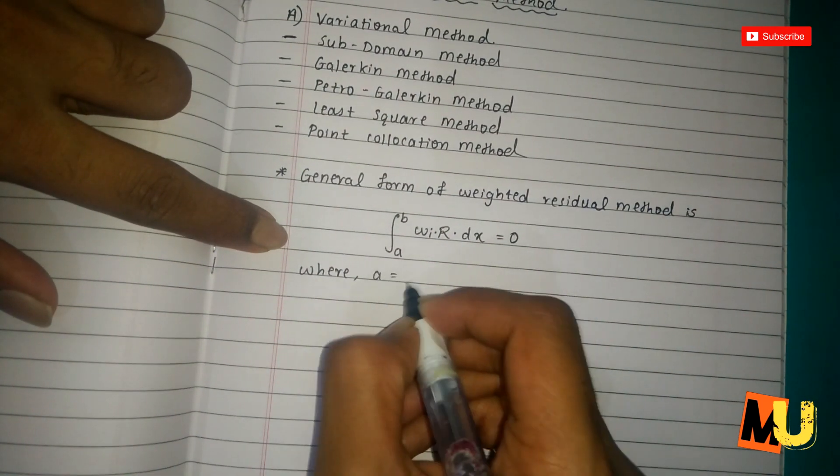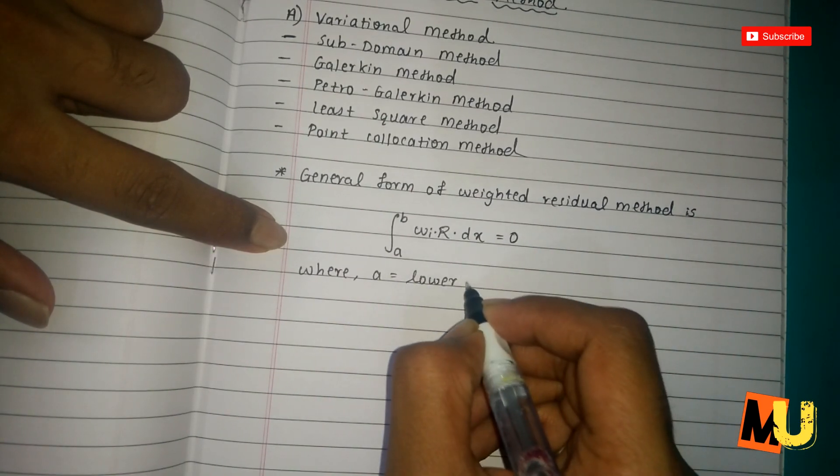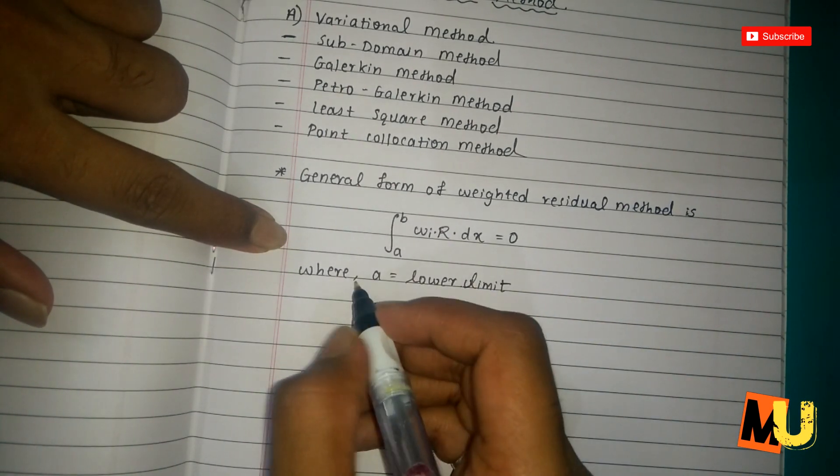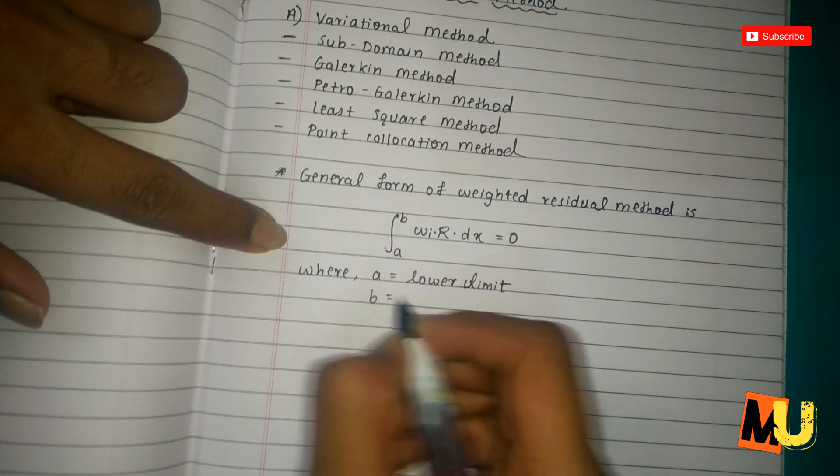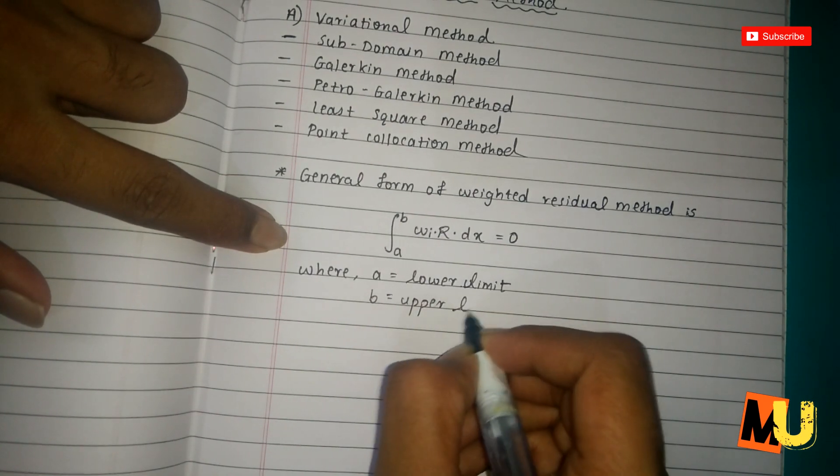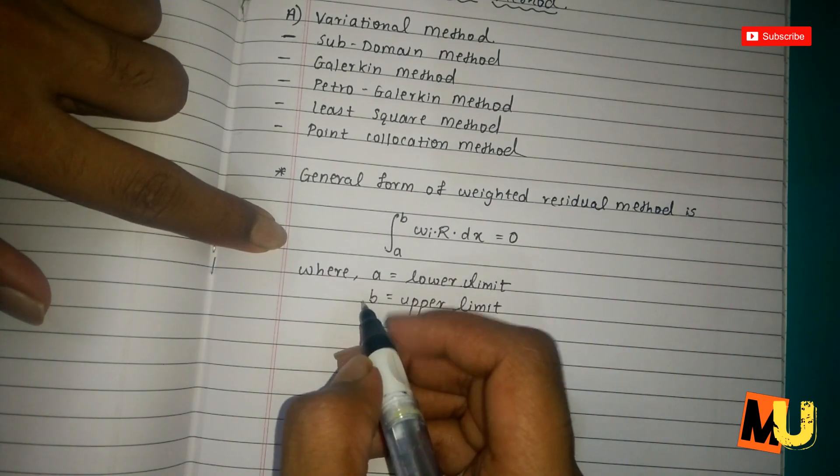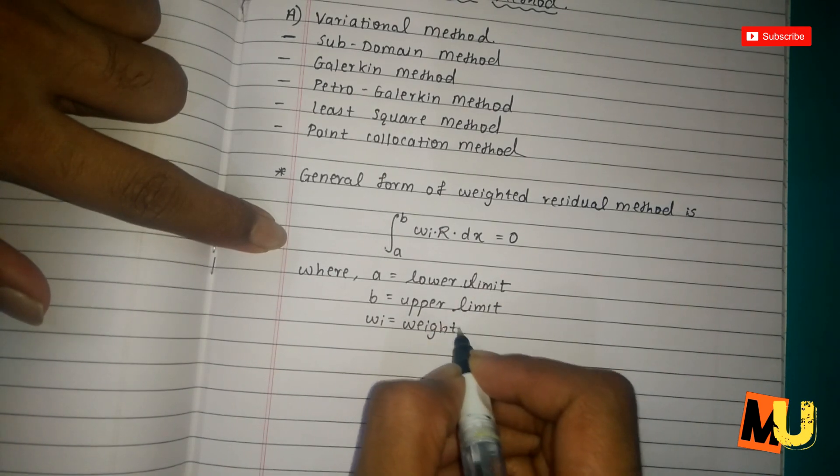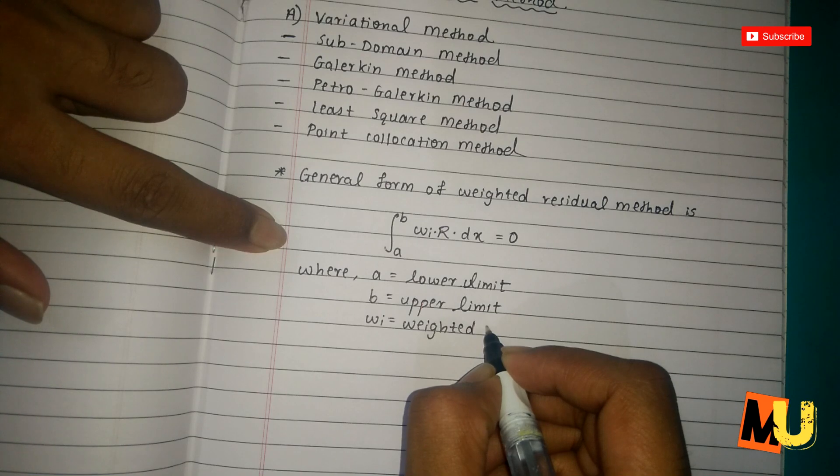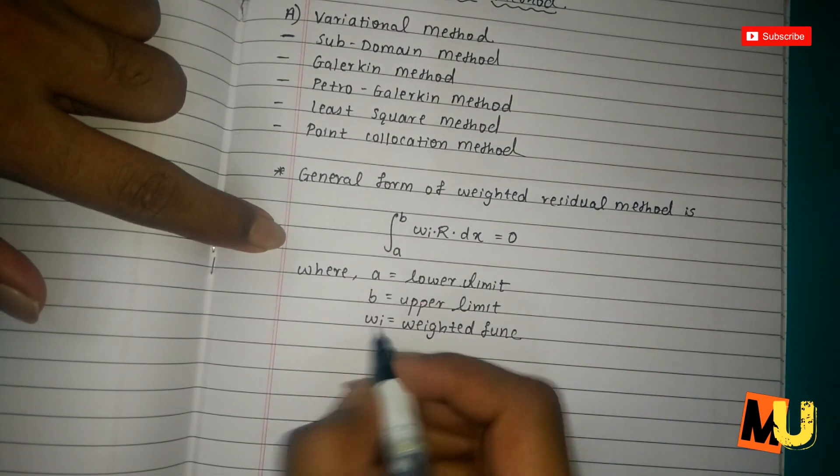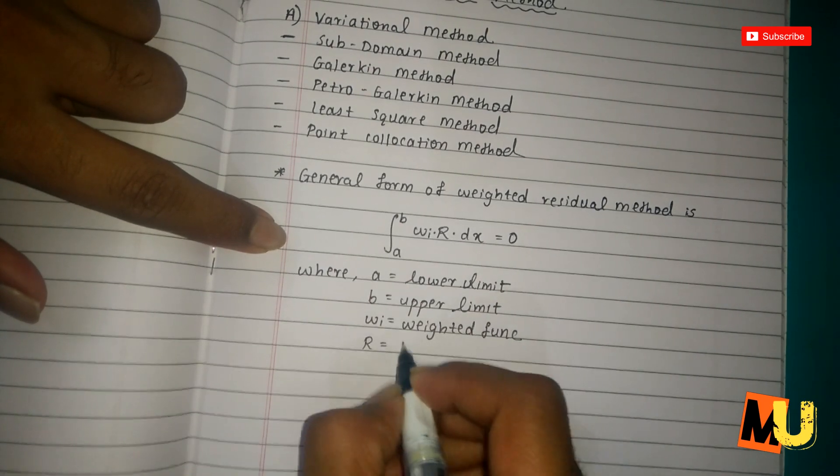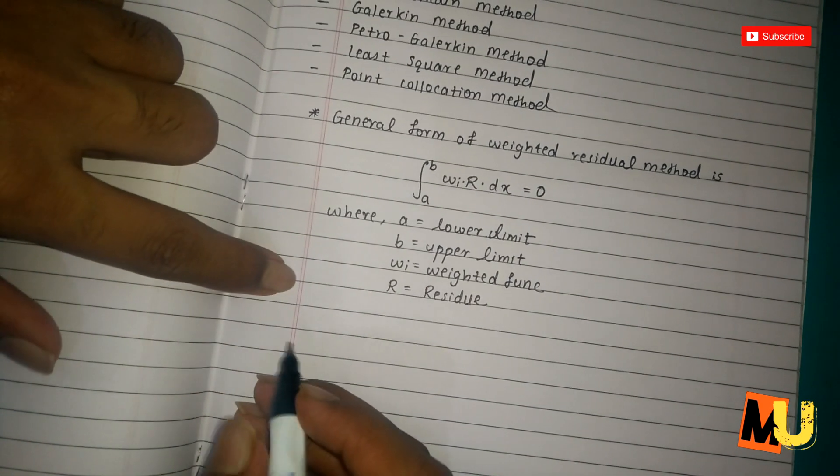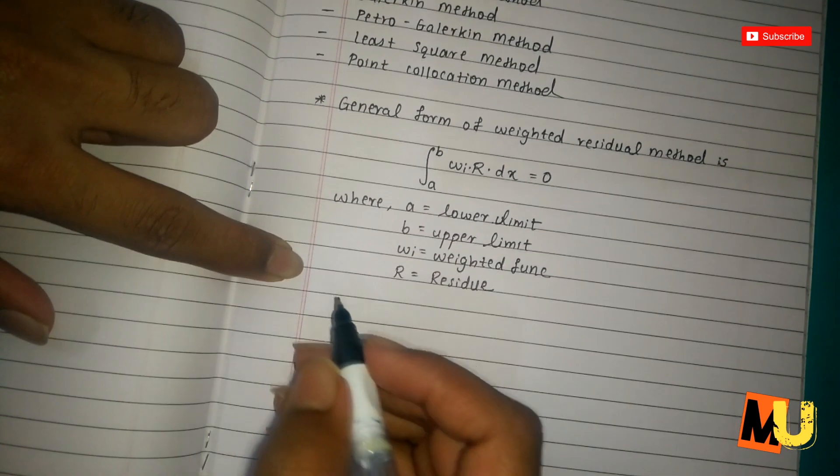Where a equals lower limit, b equals upper limit, w_i equals weighted function, and r equals residue.